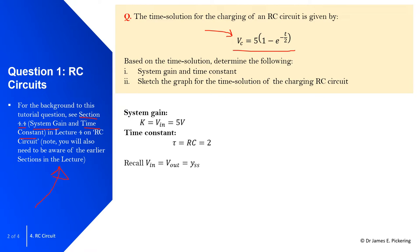To determine the system gain, the general notation is k, which in this case is v subscript in. If you remember from the general form, this equation has numbers substituted into it. So here our system gain is effectively a value of five — five volts — so the voltage v subscript in is a value of five volts.